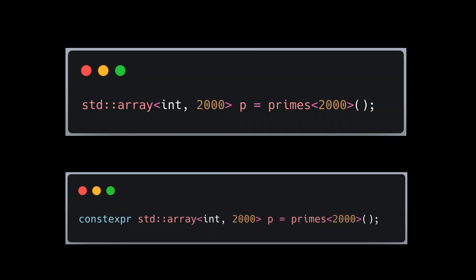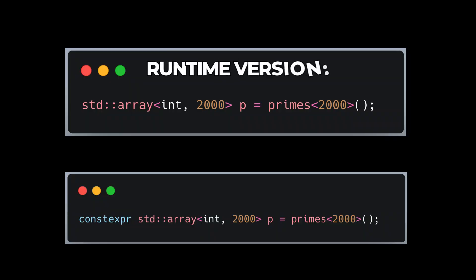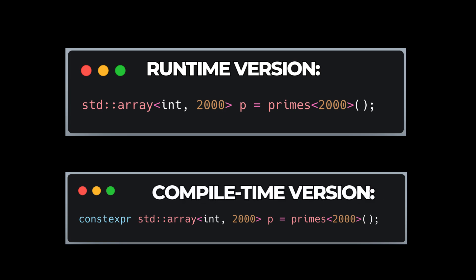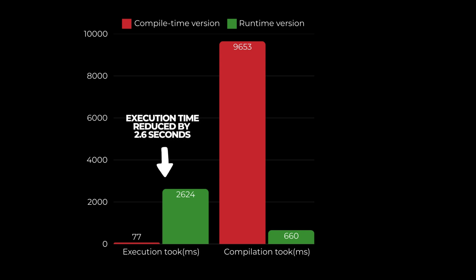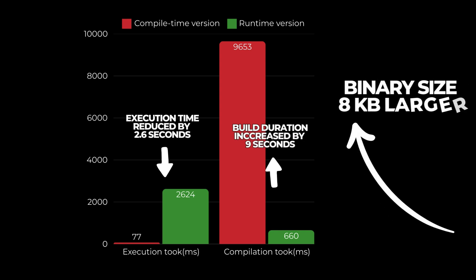I tested two versions of the program: primes calculated at runtime and primes calculated at compile time. The compile time version reduced runtime by 2.6 seconds. However, it increased build time by 9 seconds and bumped the binary size by 9 kilobytes.